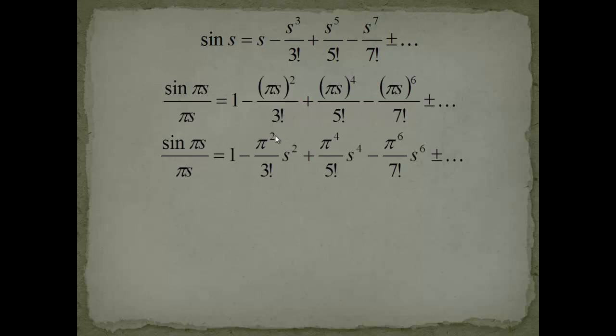Let's just rewrite it so that we have it in a nicer way so we can see the coefficients. The coefficients are 1, minus pi squared over 3 factorial, pi to the fourth over 5 factorial, and so forth.